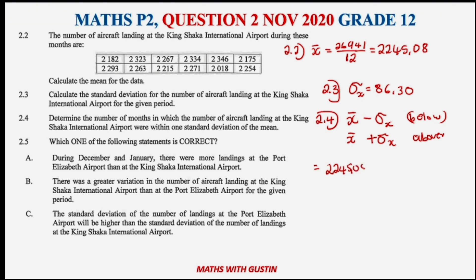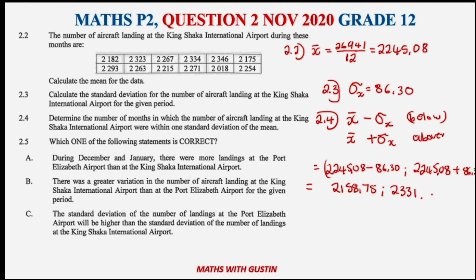Calculate the lower bound: mean minus standard deviation = 2245.08 − 86.30 = 2158.78. Calculate the upper bound: mean plus standard deviation = 2245.08 + 86.30 = 2331.38. We need to count the data values that fall between these two numbers.